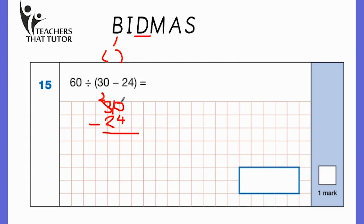And then what we're going to do is we're going to do division next. So you can see 60, and we're going to divide that by 6. How many times does 6 go into 60? It goes in 10 times, because 6 times 10 equals 60. So the final answer for this question would be 10.